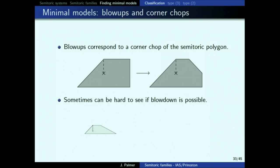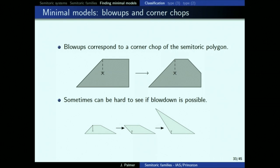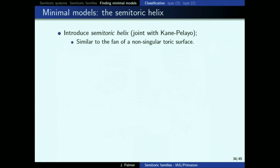Emulating the toric case, you think about the Delzant polytope and its fan — the integral inwards-pointing normal vectors. But taking the inwards-pointing normal vectors of a semi-toric polygon is a mess, because the inward-pointing normal vector of two adjacent edges at a fake corner should be the same since that corner isn't really there. This is a problem I solved with Daniel Kane and Yael Karshon, where we defined something called the semi-toric helix. The idea: every time you have a corner that shouldn't really be there, just straighten it out. You end up with the inwards-pointing normal vectors with the fake corners removed.